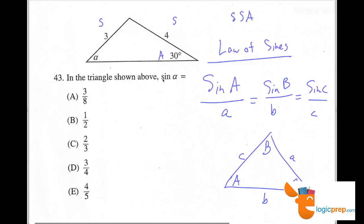So here we can say the sine of 30 over 3 has to equal the sine of alpha over 4. The sine of alpha over 4.